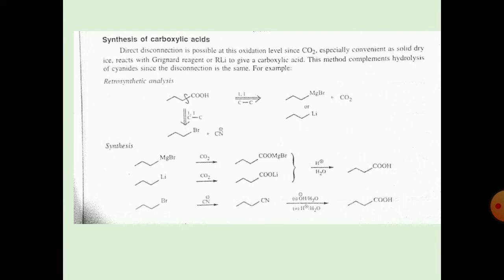For the retrosynthetic analysis: in the first approach, the COOH acidic group is broken down — one C-C bond is broken — and the formation of the alkyl halide and the CN (nitrile) group results. In the second retrosynthetic analysis, the COOH acidic group is again broken down at one carbon-carbon bond, giving the Grignard or lithium reagent.